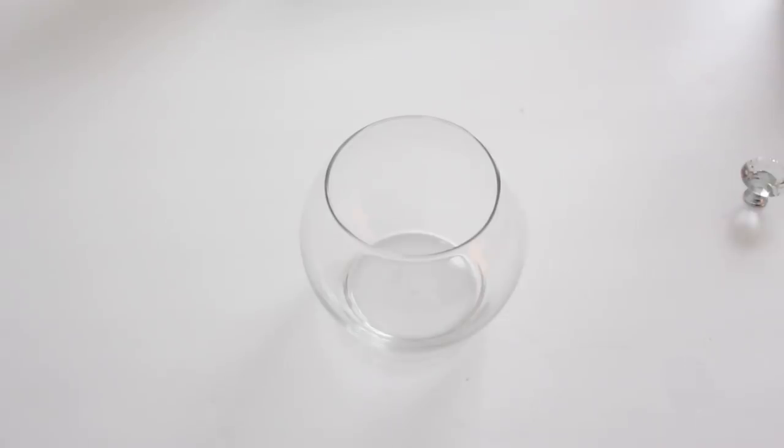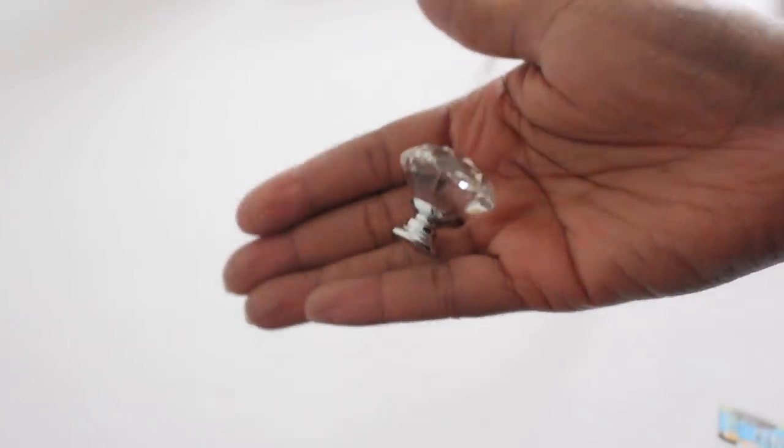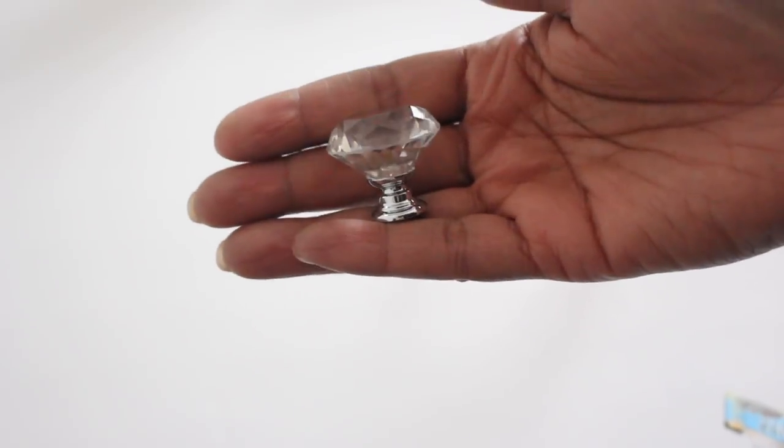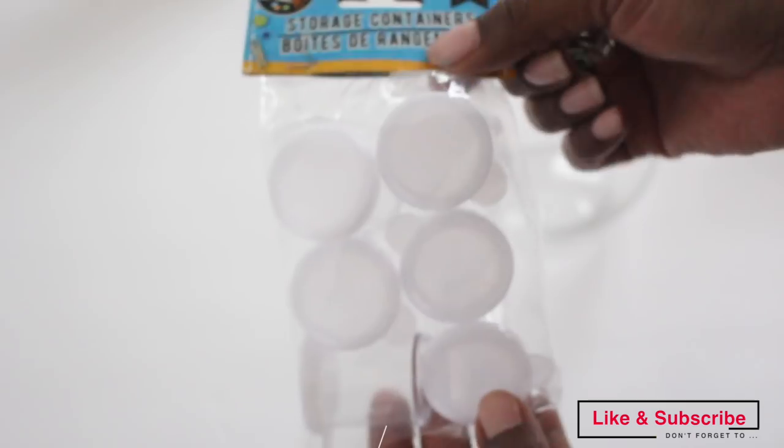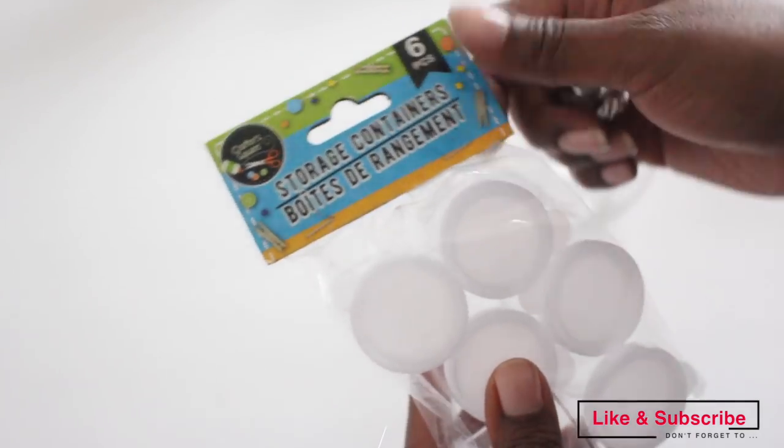You're going to need a tea light holder, which comes with two in a pack, but I'm only going to use one for this project. I'll also be using one of these crystal door knobs that I found on Amazon, and I'll put the link in the description box.